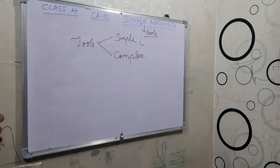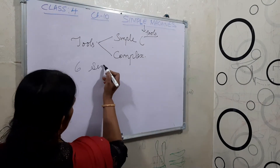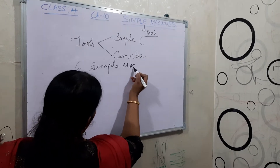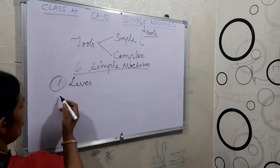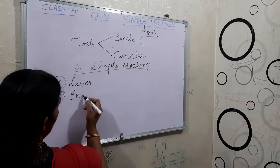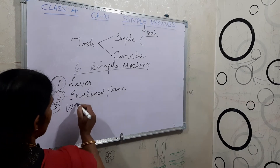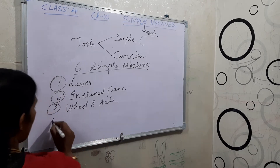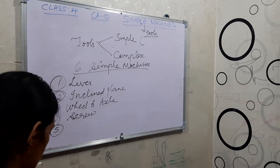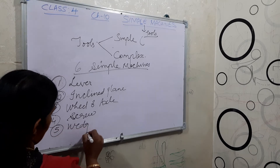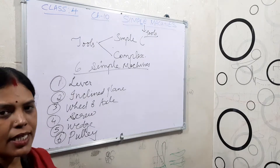Now let's see the simple machines. In class 4 you are studying about 6 simple machines. What are they? First, lever. Second, inclined plane. Third, wheel and axle. Fourth, screw. Fifth, wedge. And the sixth one is the pulley. These are the 6 simple machines you will study in class 4.